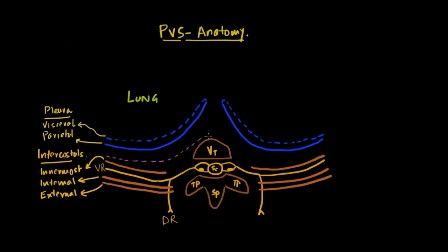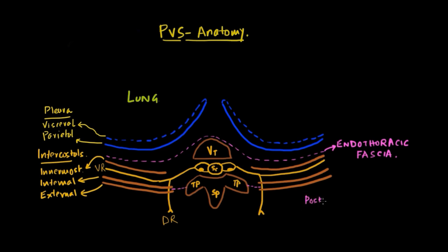Shown here in the pink dotted line is the endothoracic fascia. The endothoracic fascia is a continuation of the deep layer of the thoracic fascia in the thorax. It essentially separates the paravertebral space into two different components. More posteriorly is the posterior intercostal membrane, which connects the internal intercostal muscle with the transverse process and its lateral part at each level.